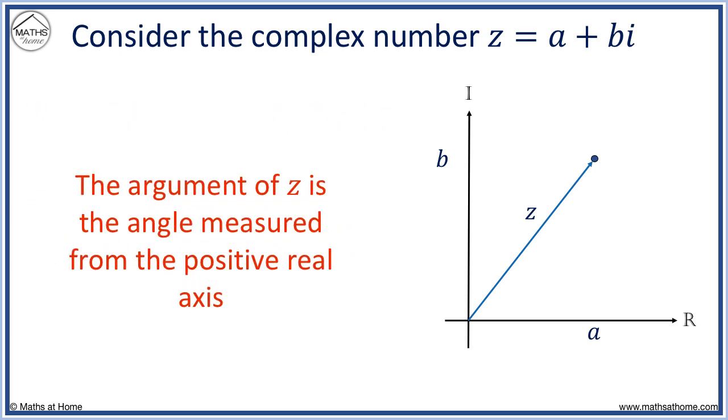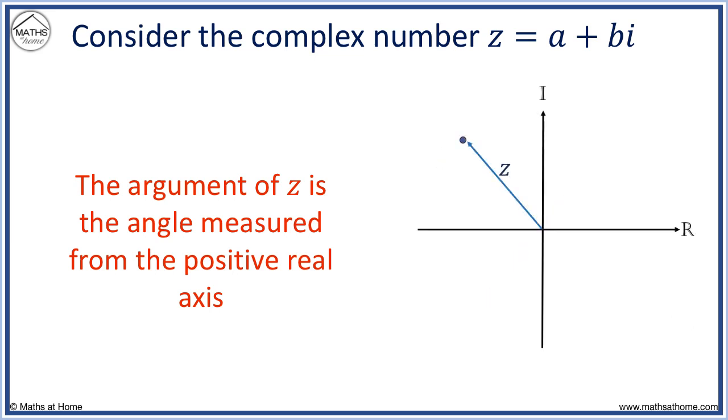Now the argument of z is the angle measured from the positive real axis. For example, the complex number shown has the argument measured from the positive real axis as shown.